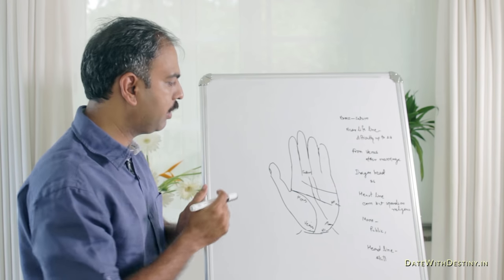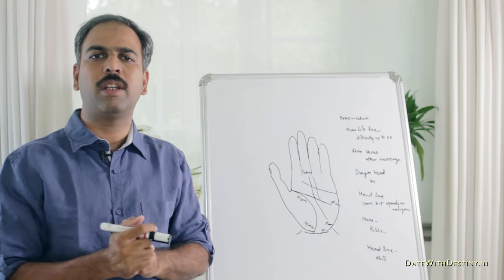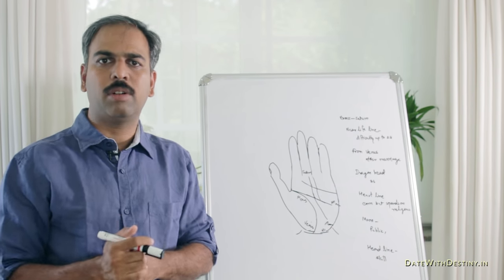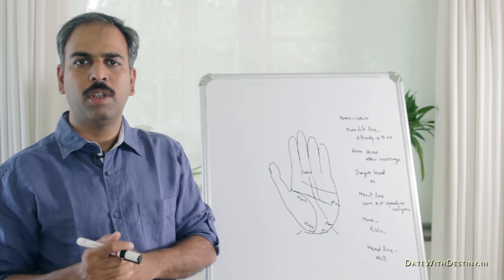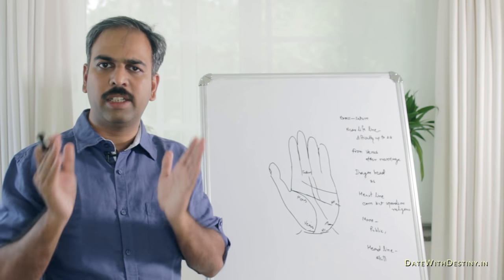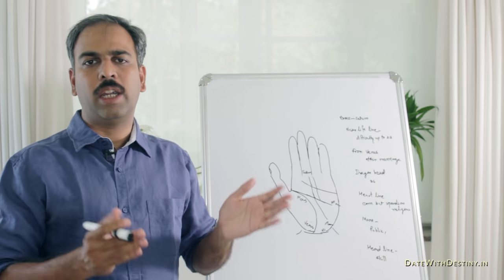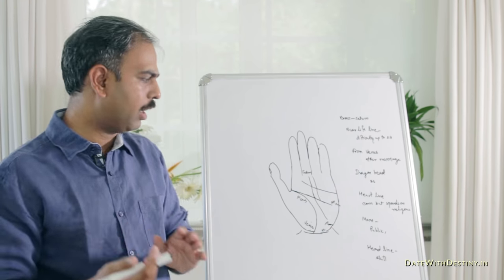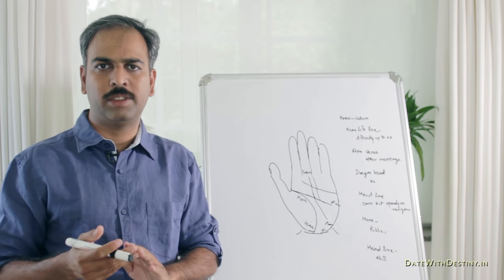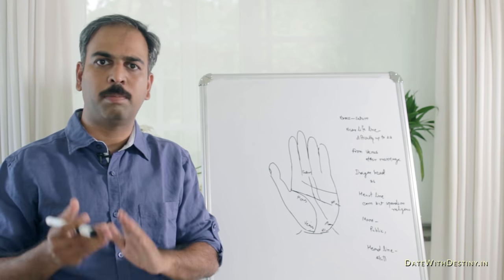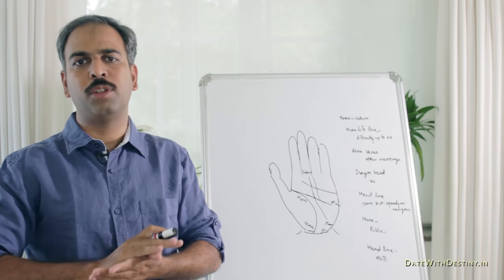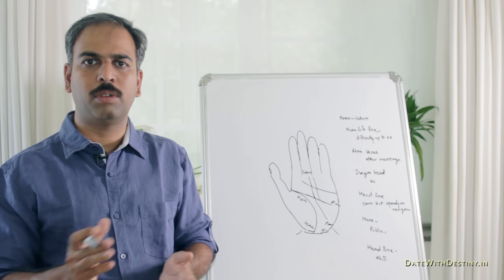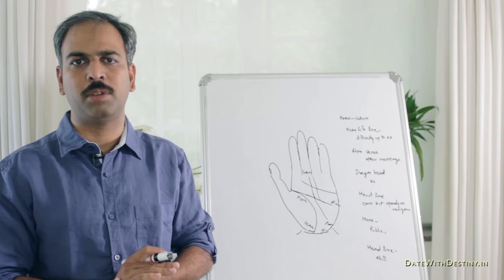These are different sites from where the Fate Line starts. Now, according to the Western point of view, Fate Line is not directly related to money. According to my research in the last 15 years, I have seen a lot of hands. I have also seen a person's hand who has no Fate Line, but he has a lot of money.